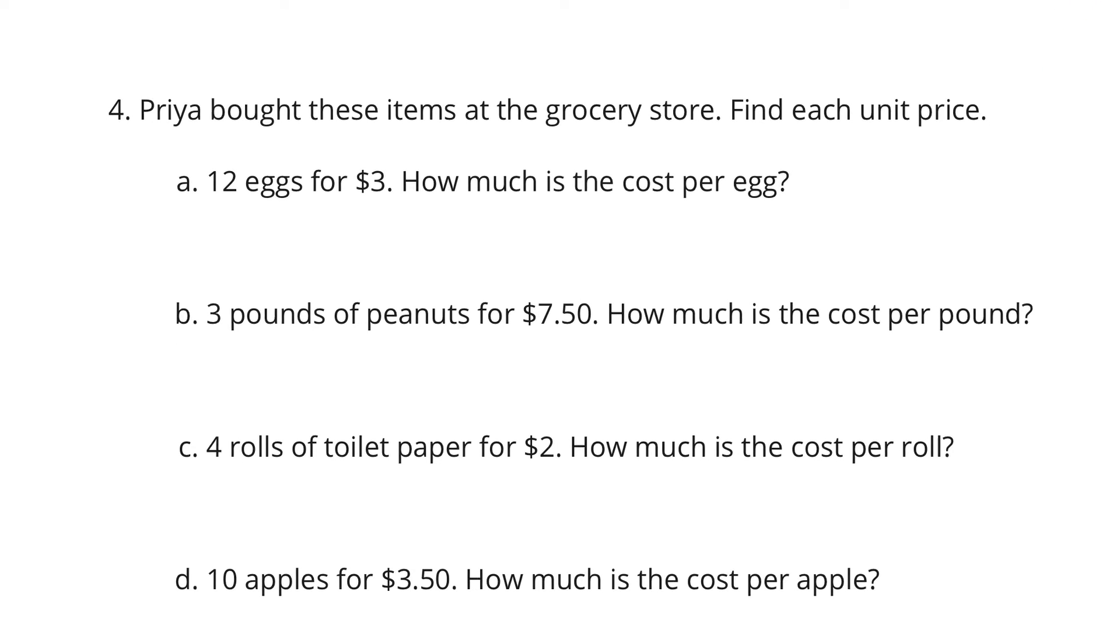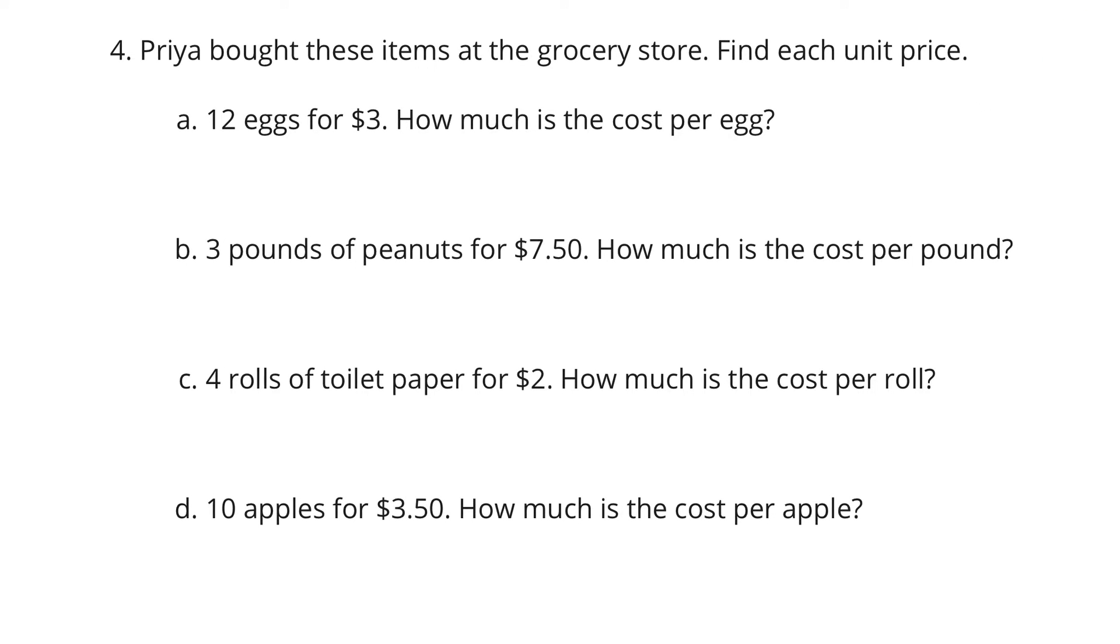Question 4. Priya bought these items at the grocery store. Find each unit price. 12 eggs for $3 cost per egg. Well, $3 for 12 eggs. We want to know how much 1 egg costs.